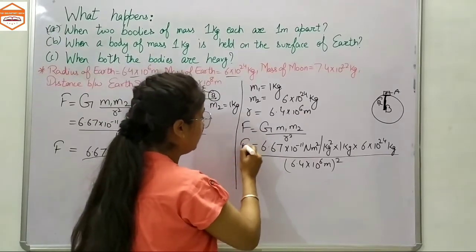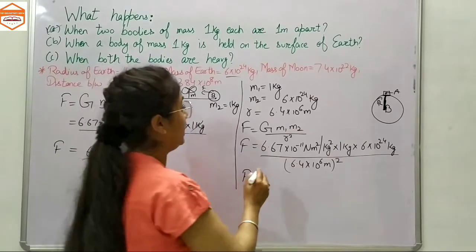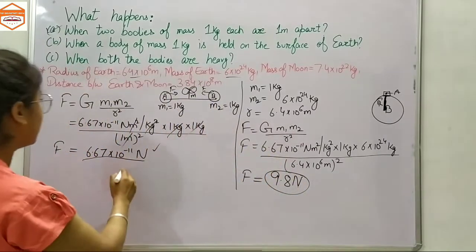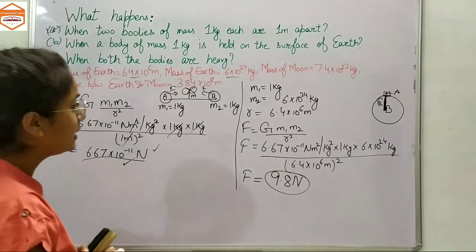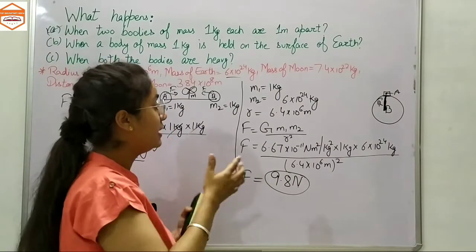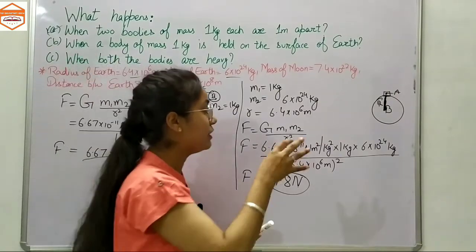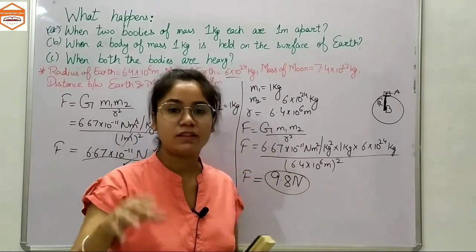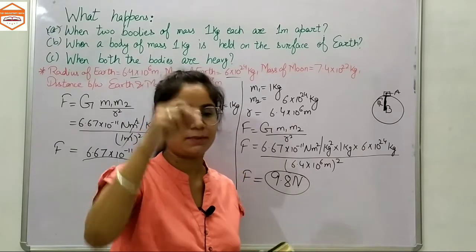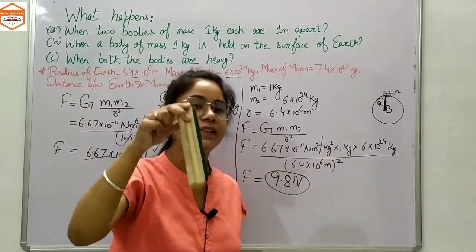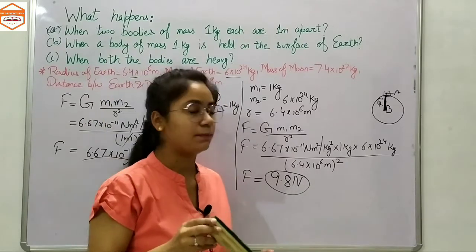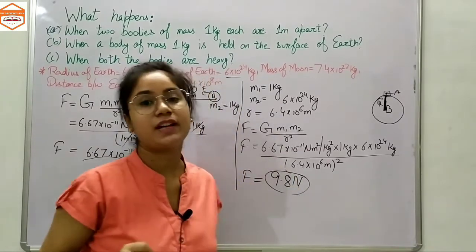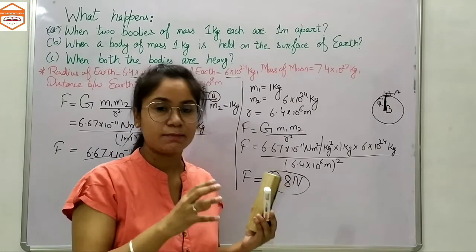This equation is large and requires a calculator. The answer is approximately 9.8 newtons — which is very large compared to the previous result. This is the gravitational force of attraction between Earth and objects at its surface. When you drop something, it falls because of this huge gravitational force of attraction between the body and Earth.